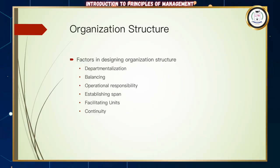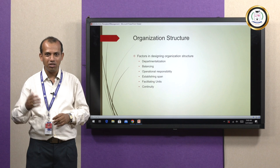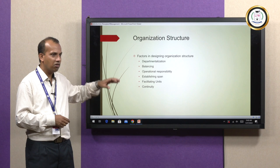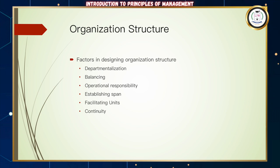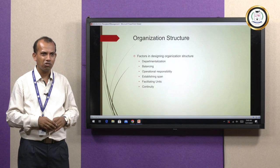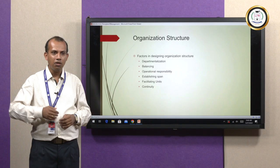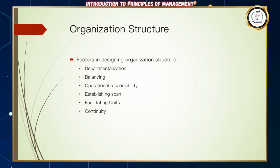Key factors in designing an organization structure include departmentalization — unique to each organization based on industry, products or services, and target markets. Balancing requires that each element be seen in context of the total structure. Operational responsibility encompasses work assignment and work responsibility — with assignment comes responsibility, and with responsibility comes accountability.